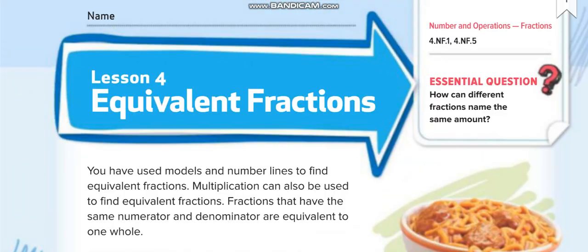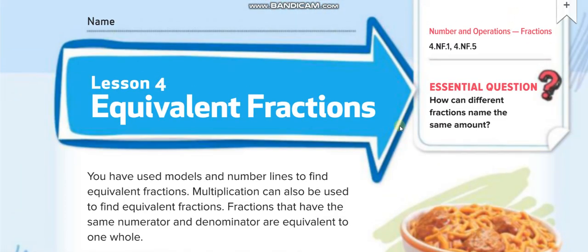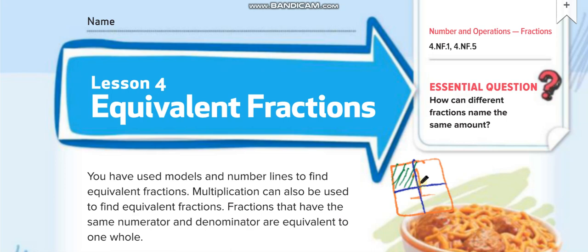Before starting today's lesson, you have to understand what fractions are. Normally, numbers like 1, 2, 3, 4 are whole numbers — whole means complete. But if I divide this one into some parts, for example four parts, and shade one out of them, it means I just have one part out of four parts of one whole.